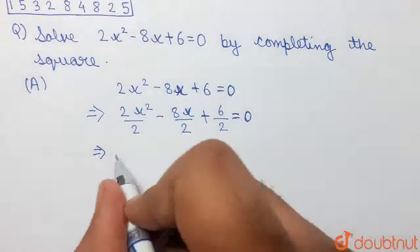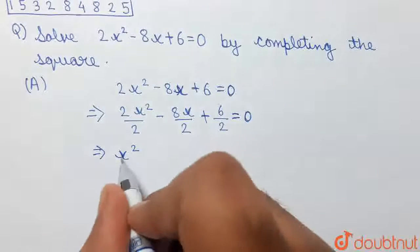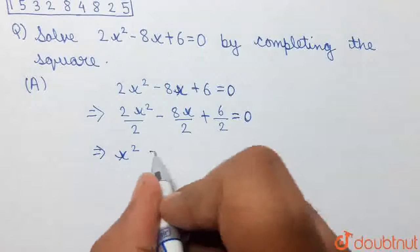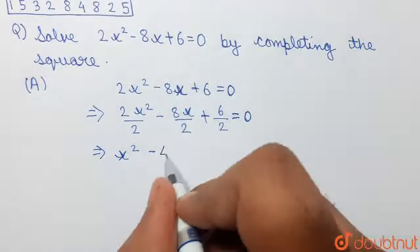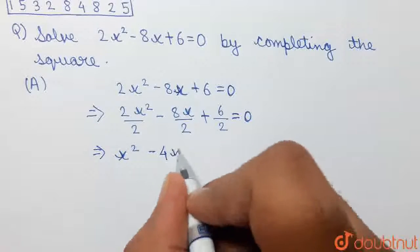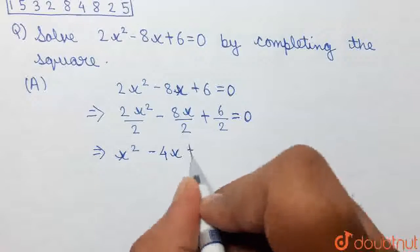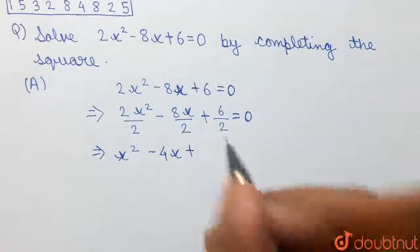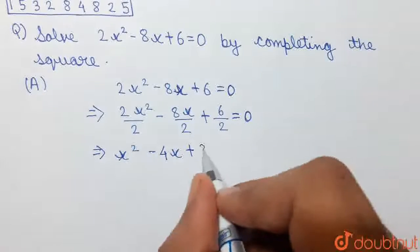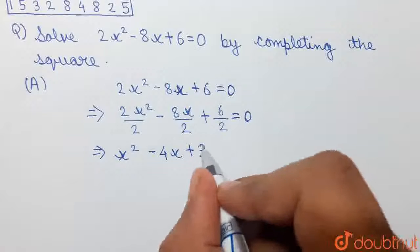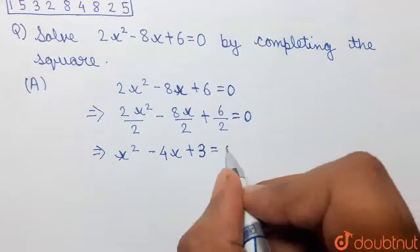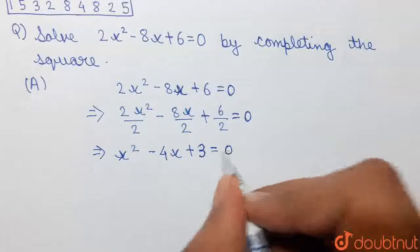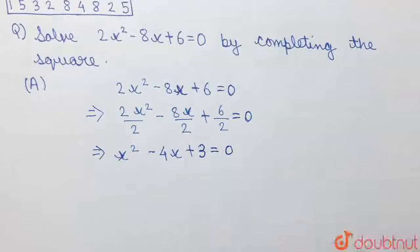So x squared — minus 8 by 2 will be 4, so minus 4x — plus 6 by 2 is 3. So we have the equation as x squared minus 4x plus 3 is equal to 0.